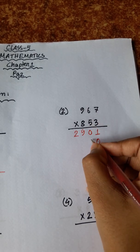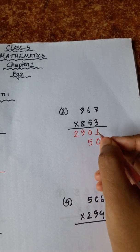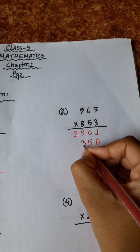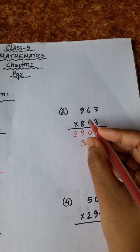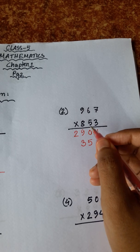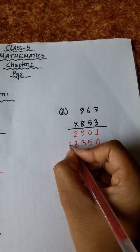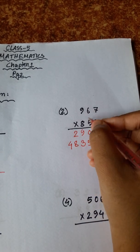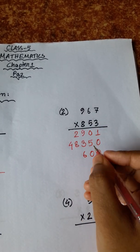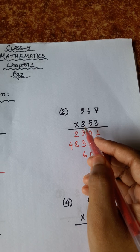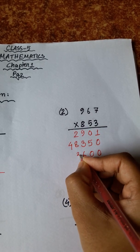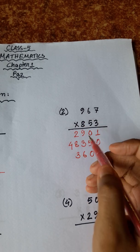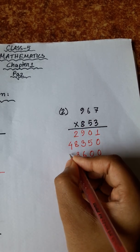7 fives are 35, carry 3. 6 fives are 30, plus 3 is 33, carry 3. 9 fives are 45, plus 3 is 48. 7 eights are 56, carry 5. 6 eights are 48, plus 5 is 53, carry 5. 9 eights are 72, plus 5 is 77.